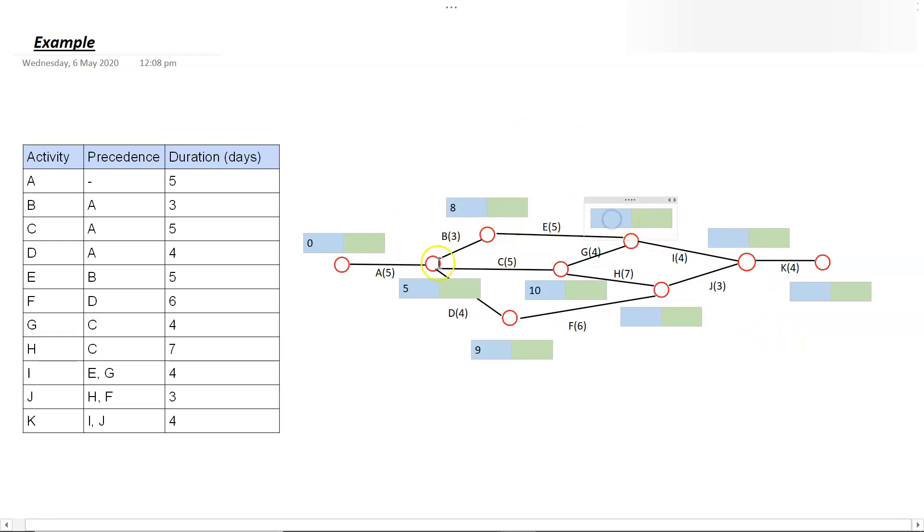So for example, with this one, if we were to follow this through, we have five plus three is eight plus five, would be 13. And if we follow this one through, we'd have five plus five plus four, which is 14. So we won't use 13, we'll use 14 there for this node.